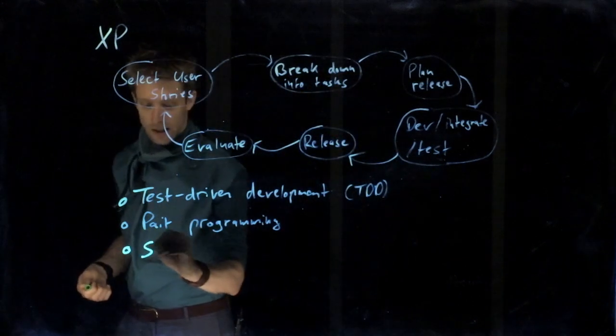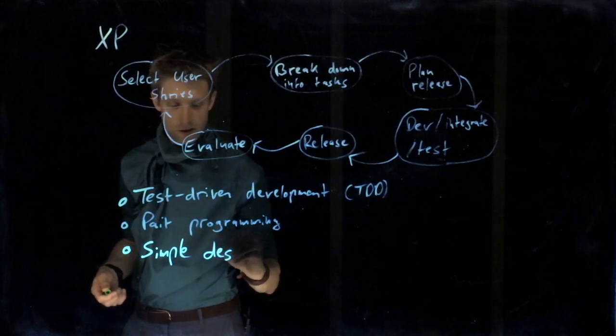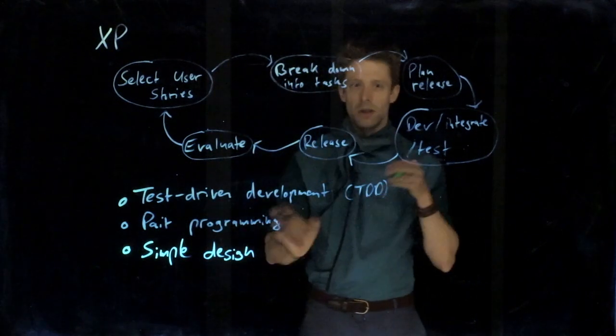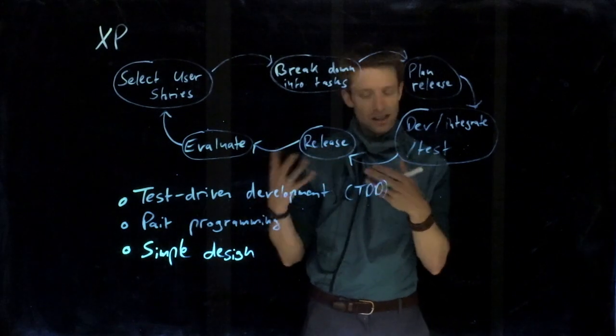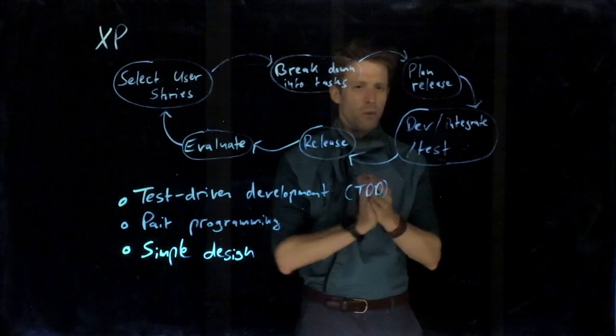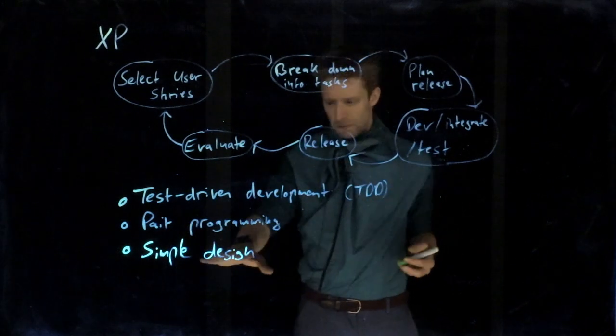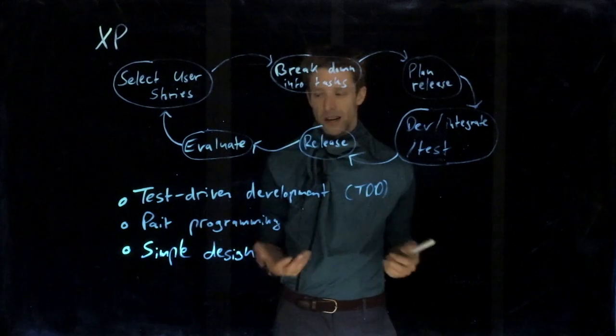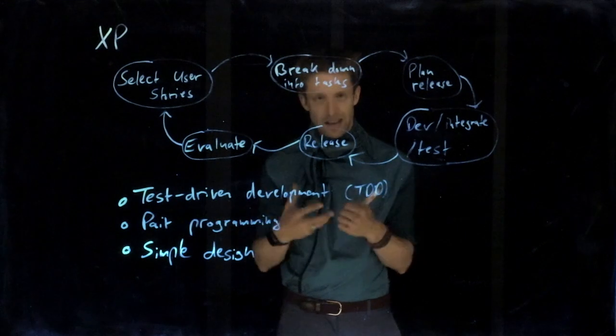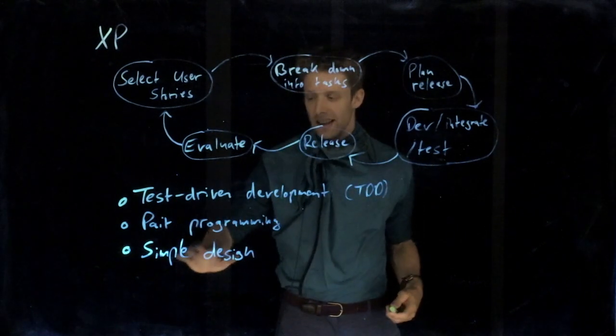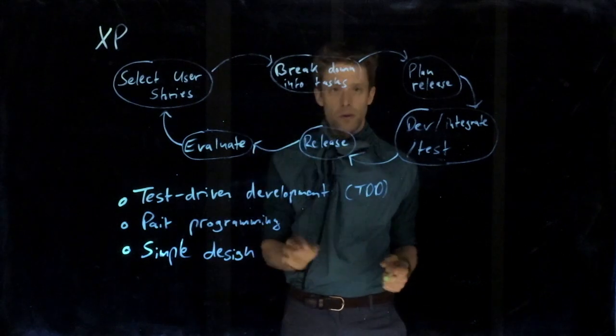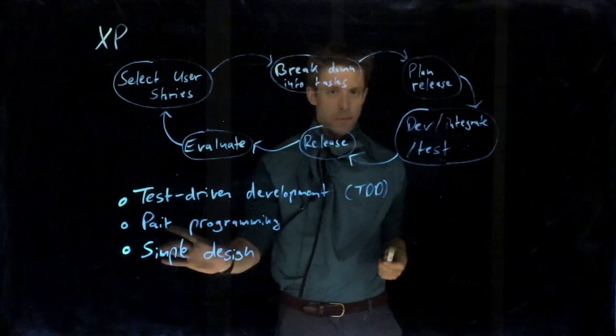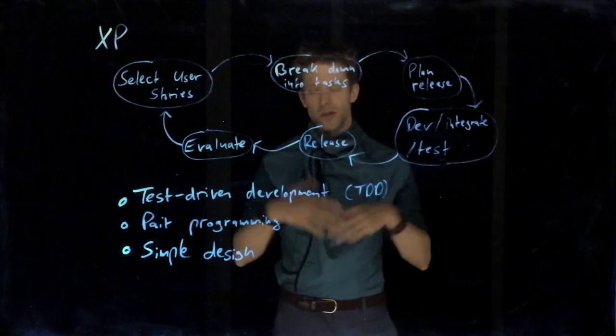Then there's something we call simple design. And the idea behind simple design is very often when we write code, we try to think of all the possible use cases and we try to think how could this function, for example, be changed in the future, what else could you use it for, and you try to make it generic. And back when XP came out, the idea was that very often we overdo this. And a lot of the code we write is never being used because we try to make it all that generic, but it actually is never used in a different way. And in XP, the idea is don't overdo design. Just do it simple so that it solves the problem that you have right now. Don't try to think ahead too much because things will change. So do it basic, implement it until it runs and then stop. Don't try to make it super generic.